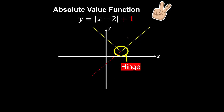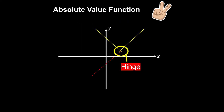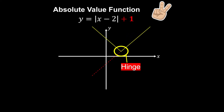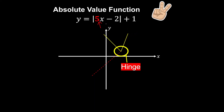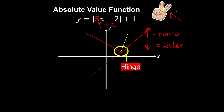What if we add plus 1 outside the modulus? That directly adds 1 to the y value — this is the y-shift. If you add 1 to the y value, the graph shifts up by 1 unit. If it's minus 1, the graph shifts down by 1 unit. What if we increase the coefficient of x? If the coefficient is higher, the graph gets narrower. When the coefficient of x is smaller, the graph is wider. So if we have 0.1x, the graph is wider, but the V-shape is always there.